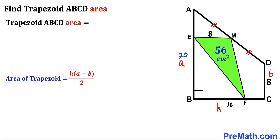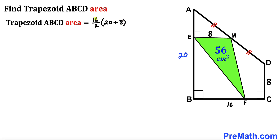Filling in the formula: the area of trapezoid ABCD equals 16 divided by 2, times (20 plus 8). The fraction 16 over 2 reduces to 8, and 20 plus 8 equals 28. So the area equals 8 times 28, which gives us 224 centimeter square.